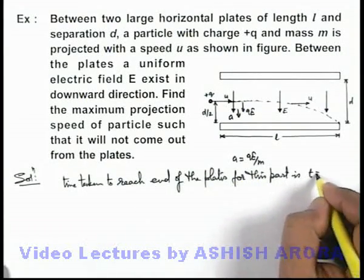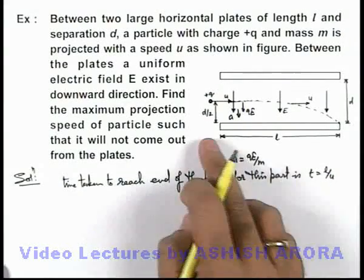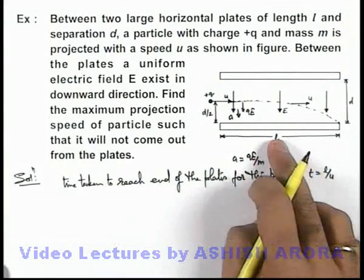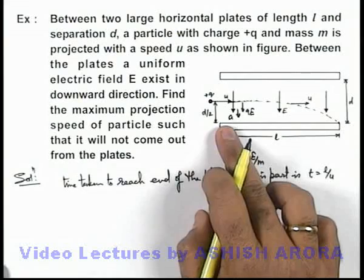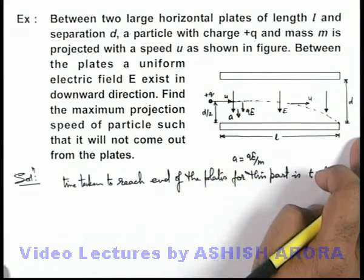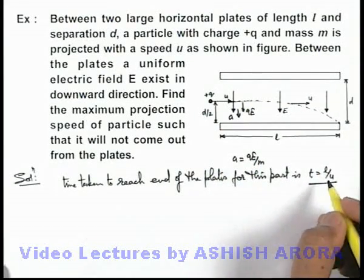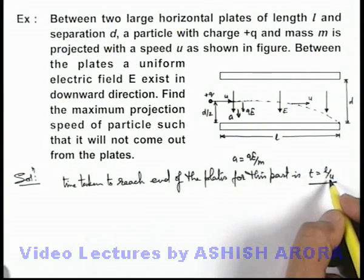This time we can simply write as L/u because horizontally it has to cover a distance L if it has to cross the plate. The maximum time available to cross the plate is L/u.